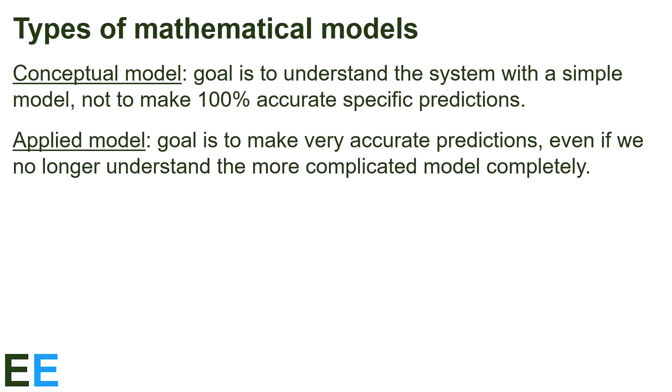Finally, there are two different types of mathematical models. There are conceptual models, where the goal is to understand the system with a simple model, not to make 100% accurate specific predictions. And there are applied models, where the goal is to make very accurate predictions even if we no longer understand the more complicated model completely.